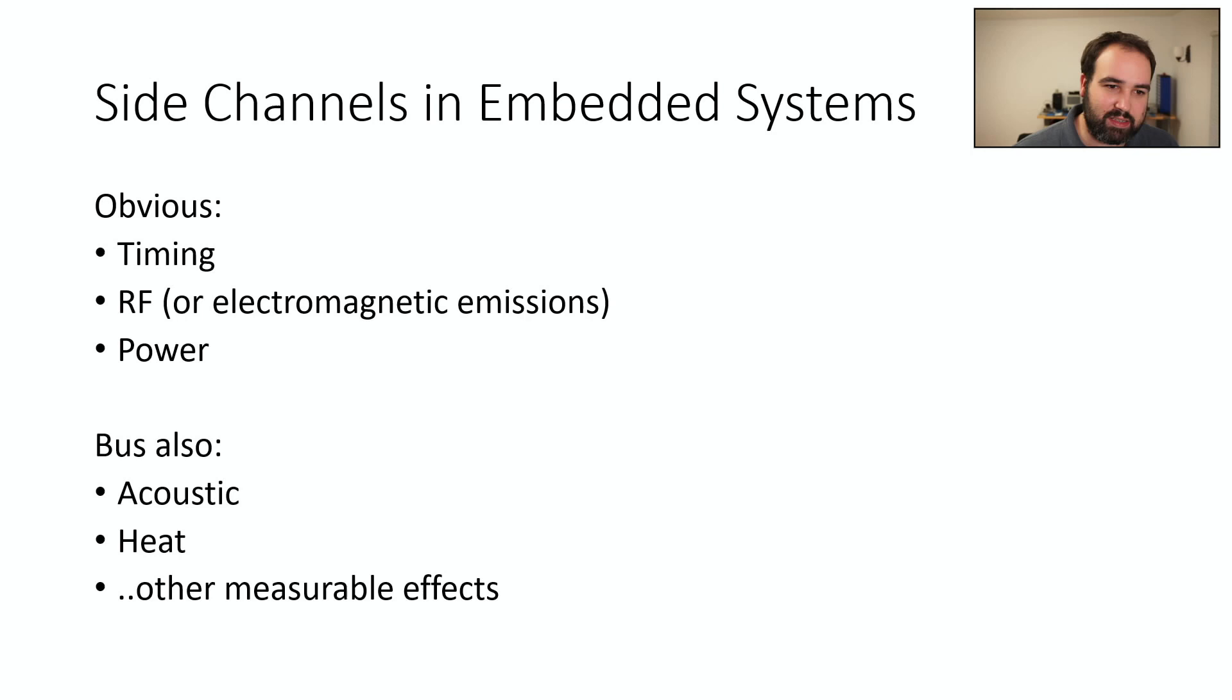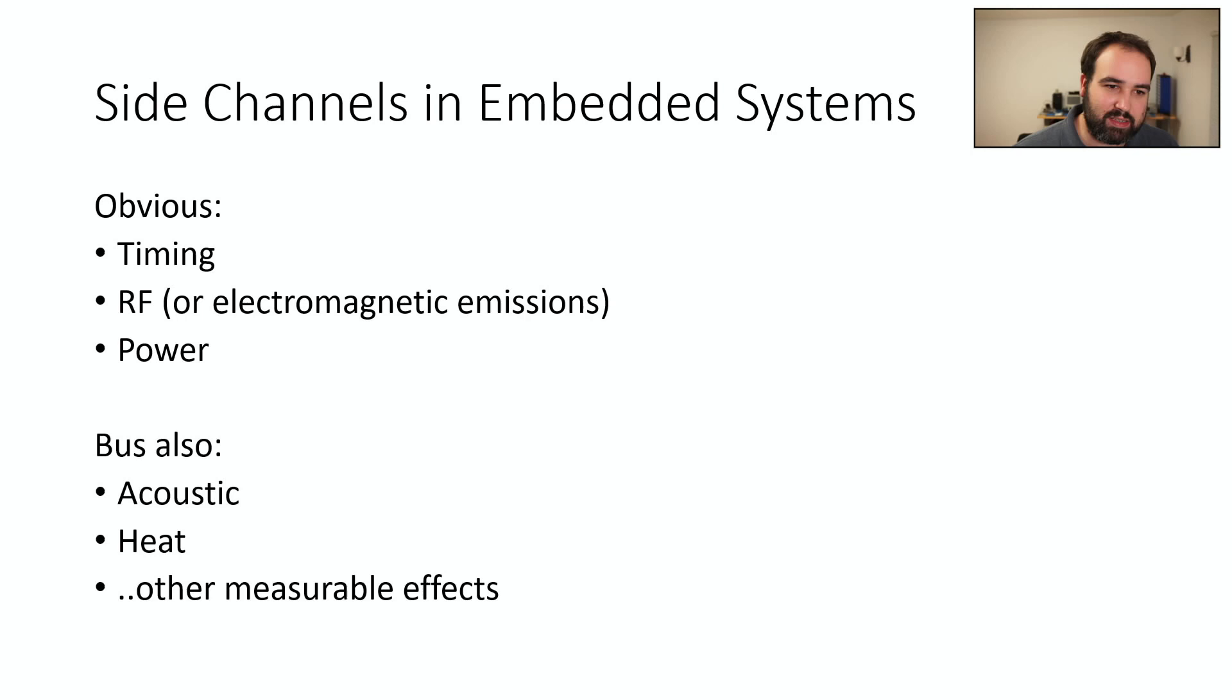Okay, so we care about embedded systems. We're going to concentrate on a few specific ones. So we're going to look at timing side channels. We're going to look at power side channels. And related to that is RF or electromagnetic emission side channels. These are sort of the obvious ones that you'll find quite a bit of information available. There's other ones out there. So acoustic. So devices actually can have different sounds as they're doing different operations. Heat.